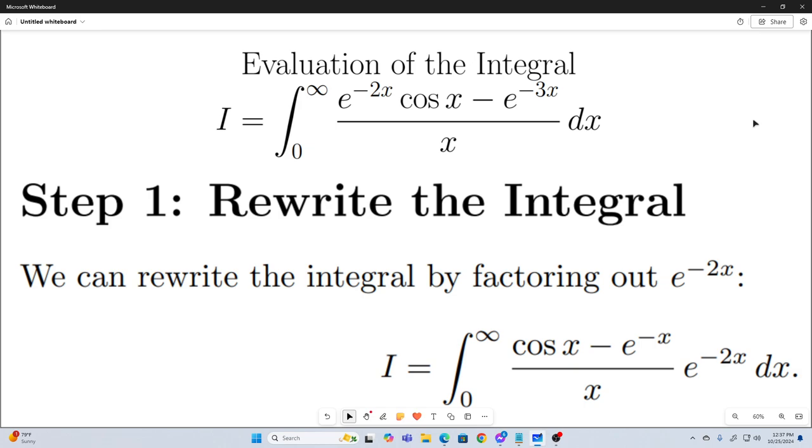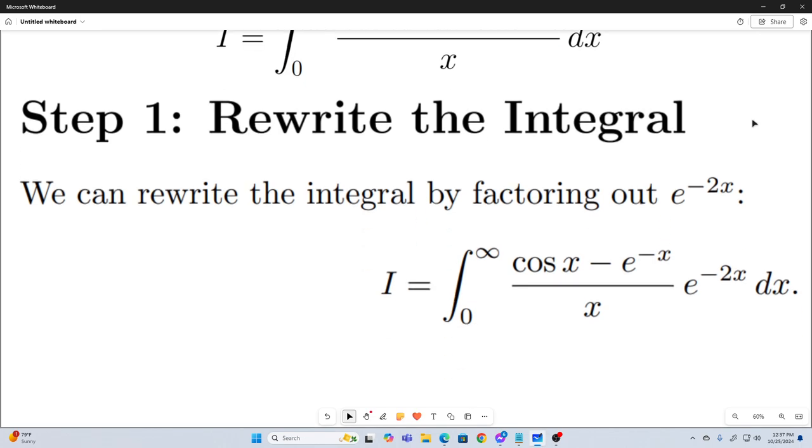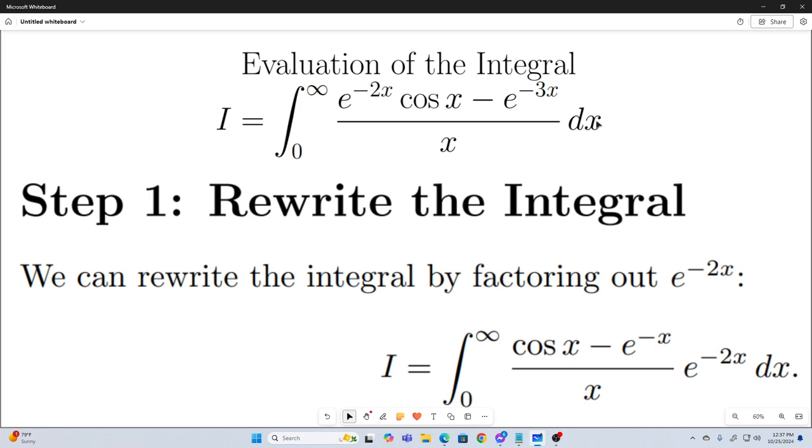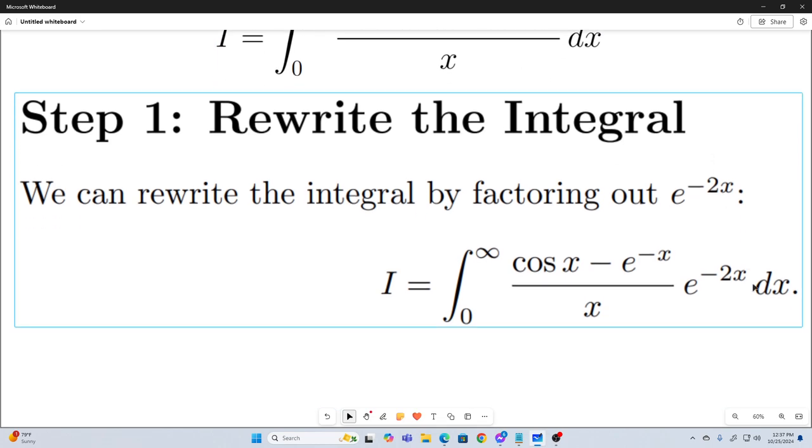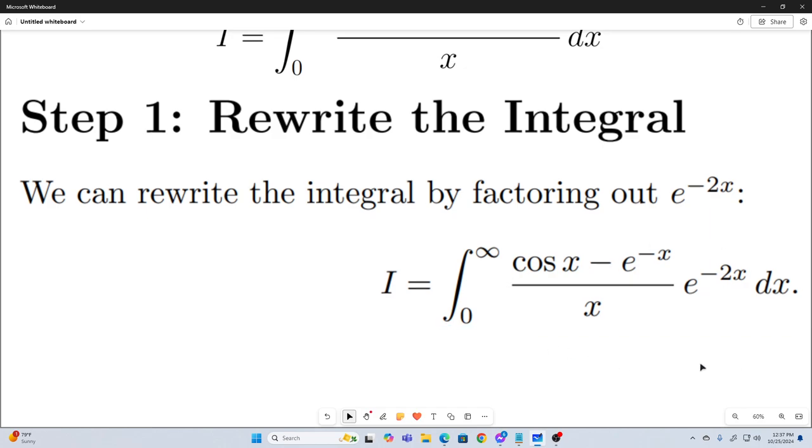So step one, we're going to rewrite the integral just by factoring out an e to the negative 2x. So now it looks like this. Simple enough.